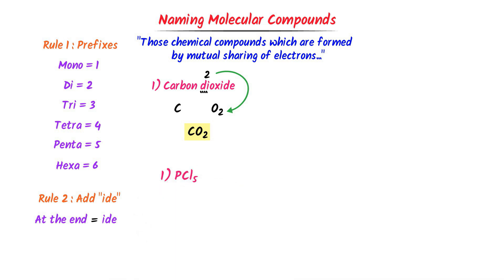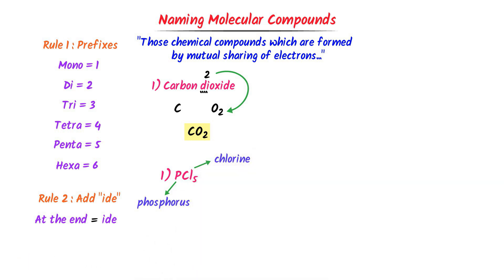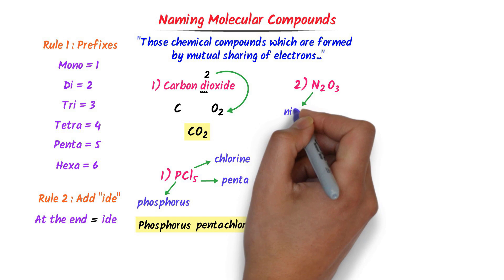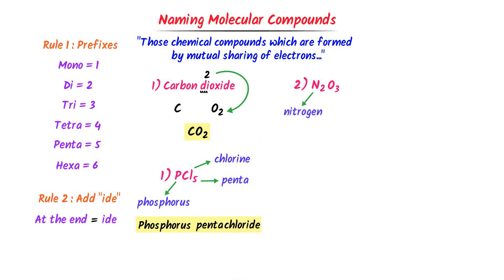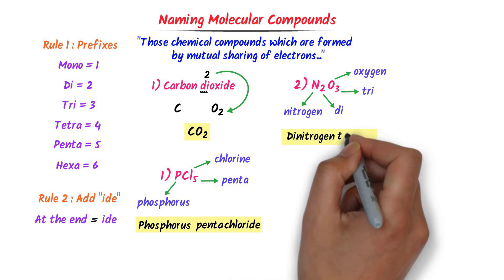Consider PCl₅: P stands for phosphorus and Cl stands for chlorine. The subscript 5 means penta. We write phosphorus, then penta for 5 atoms of chlorine, then chloride — giving phosphorus pentachloride. For N₂O₃: there are 2 atoms of nitrogen, so we write di, and 3 atoms of oxygen, so we write tri — giving dinitrogen trioxide.